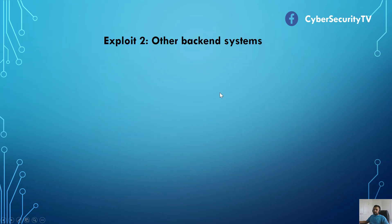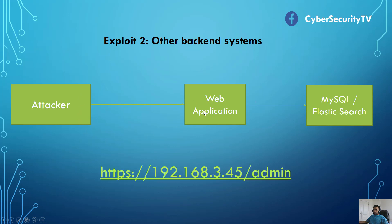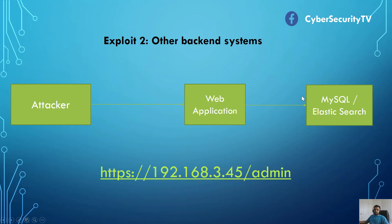The other scenario is exploiting other back-end systems. As discussed, there may be MySQL or Elasticsearch in the back-end. The attacker forwards the same unvalidated malicious URL to the web application, which then calls that IP address — maybe targeting the admin module, or MySQL, or similar. Rather than localhost, now we are trying to exploit another internal host which is not externally visible — this is an internal IP address.